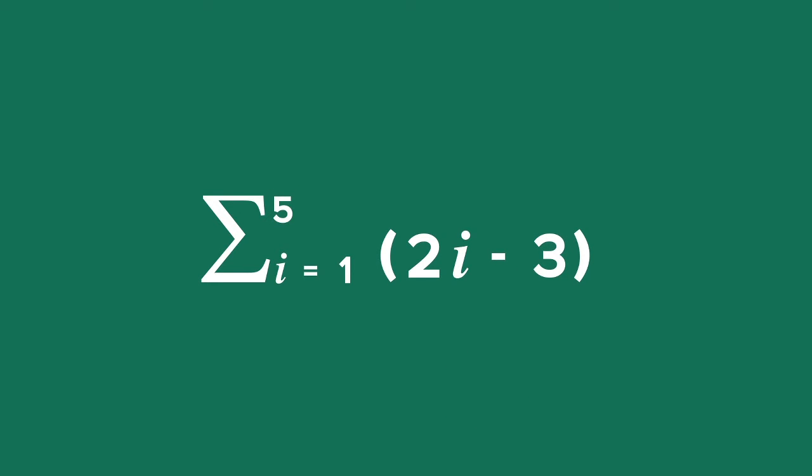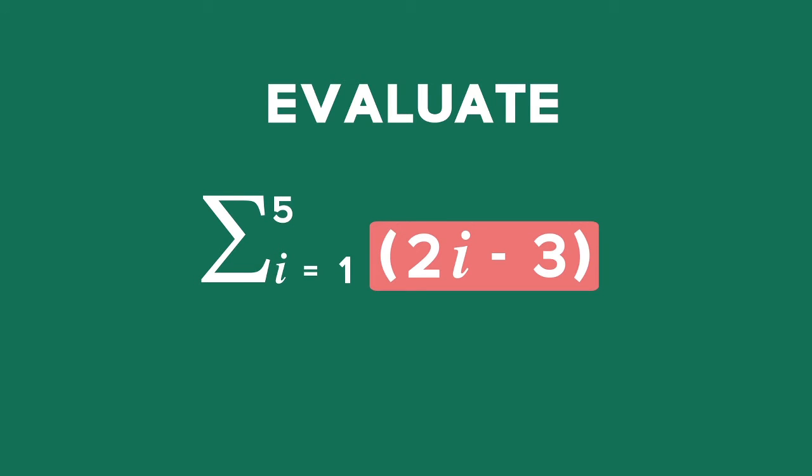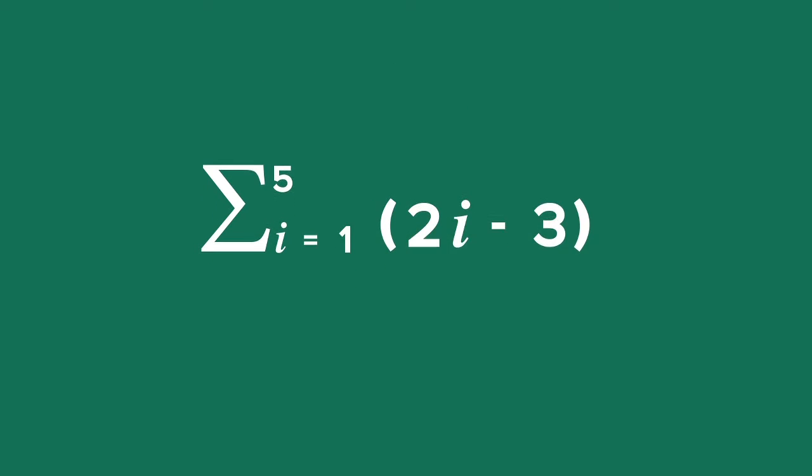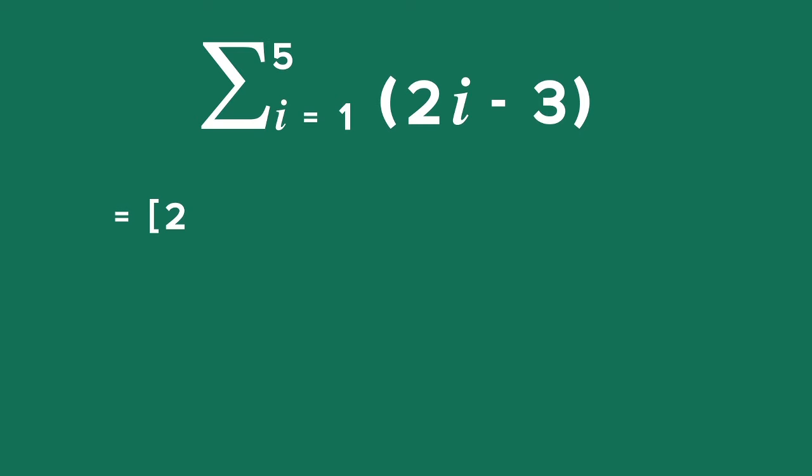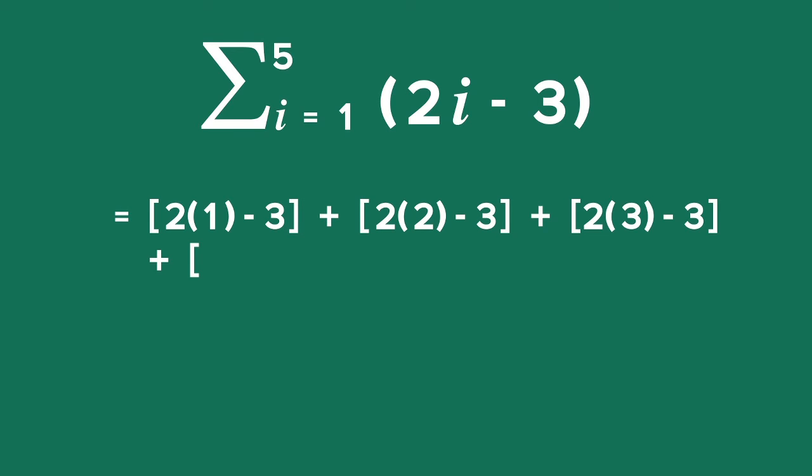All the terms must then be added together. Evaluate the sum of all terms from i equal to 1 to 5 of 2i minus 3. This means we are summing up the first five terms as 2 times 1 minus 3 plus 2 times 2 minus 3 plus 2 times 3 minus 3 plus 2 times 4 minus 3 plus 2 times 5 minus 3, which is equal to 15.